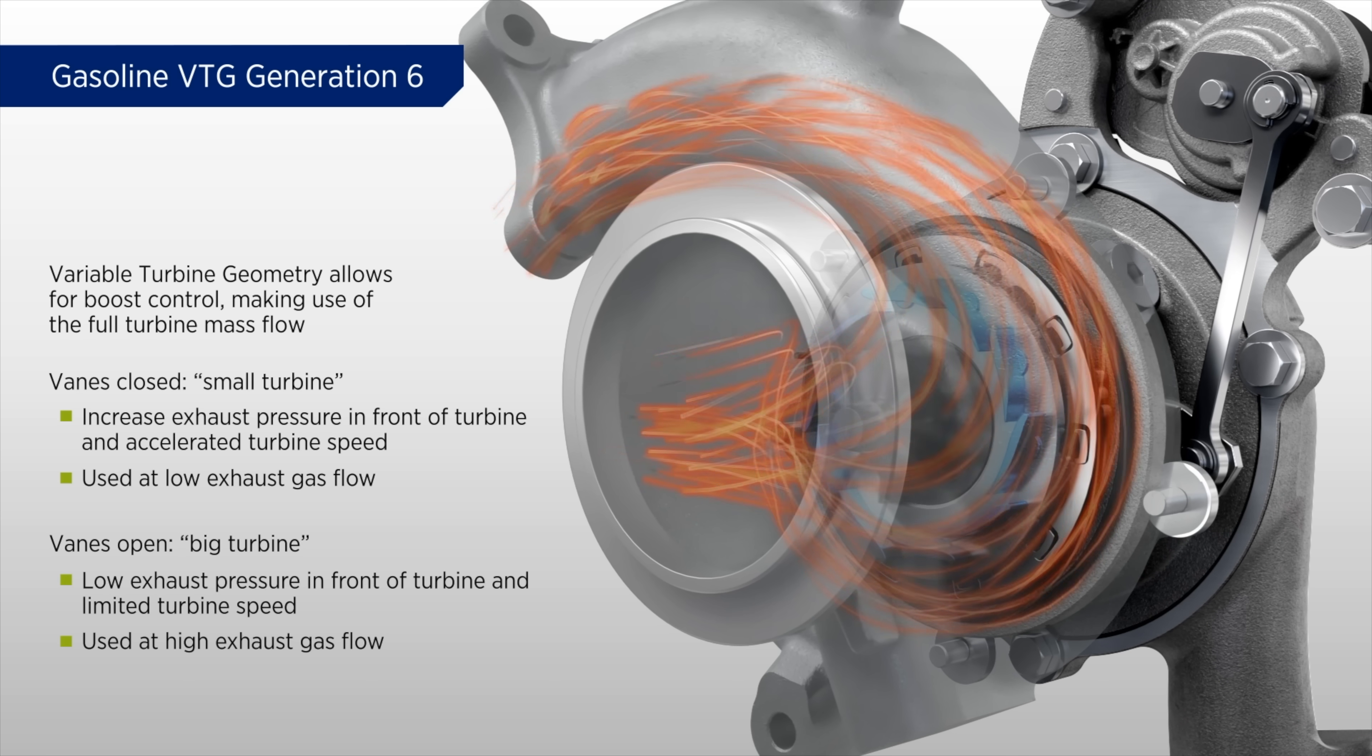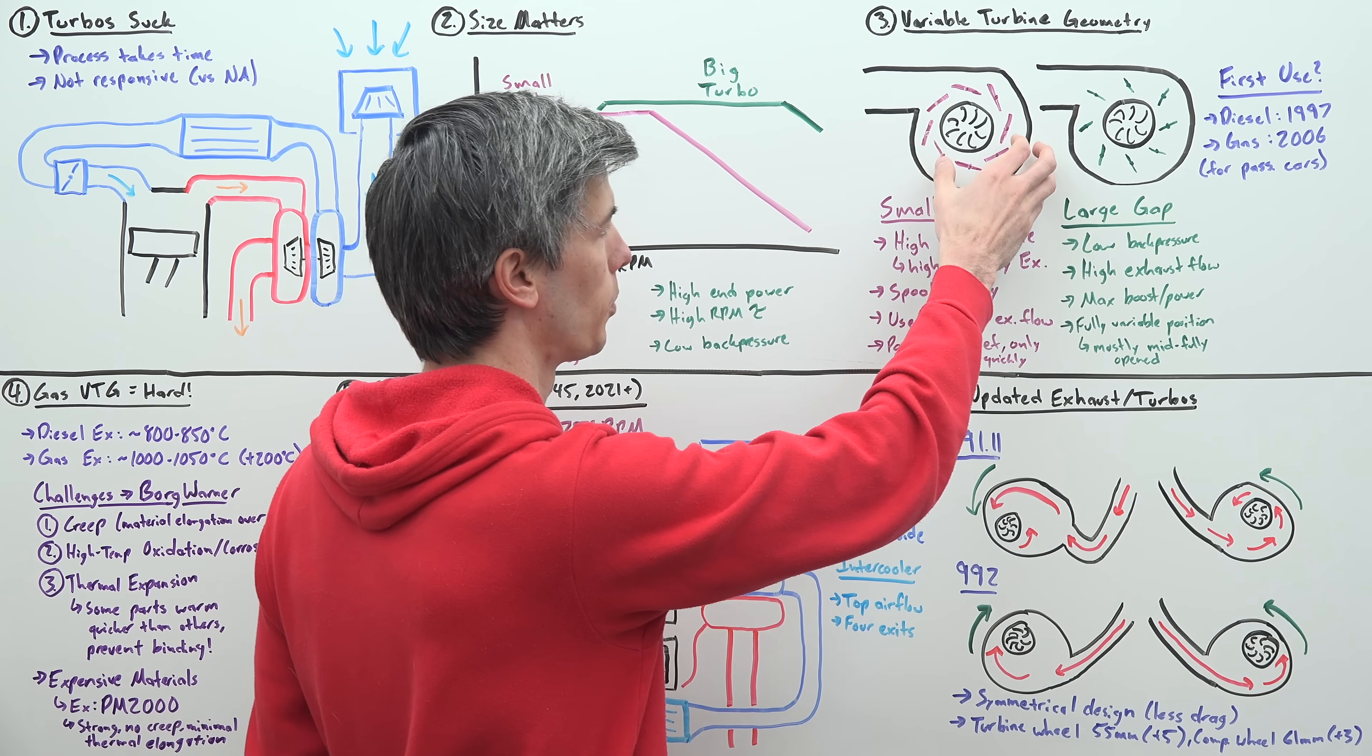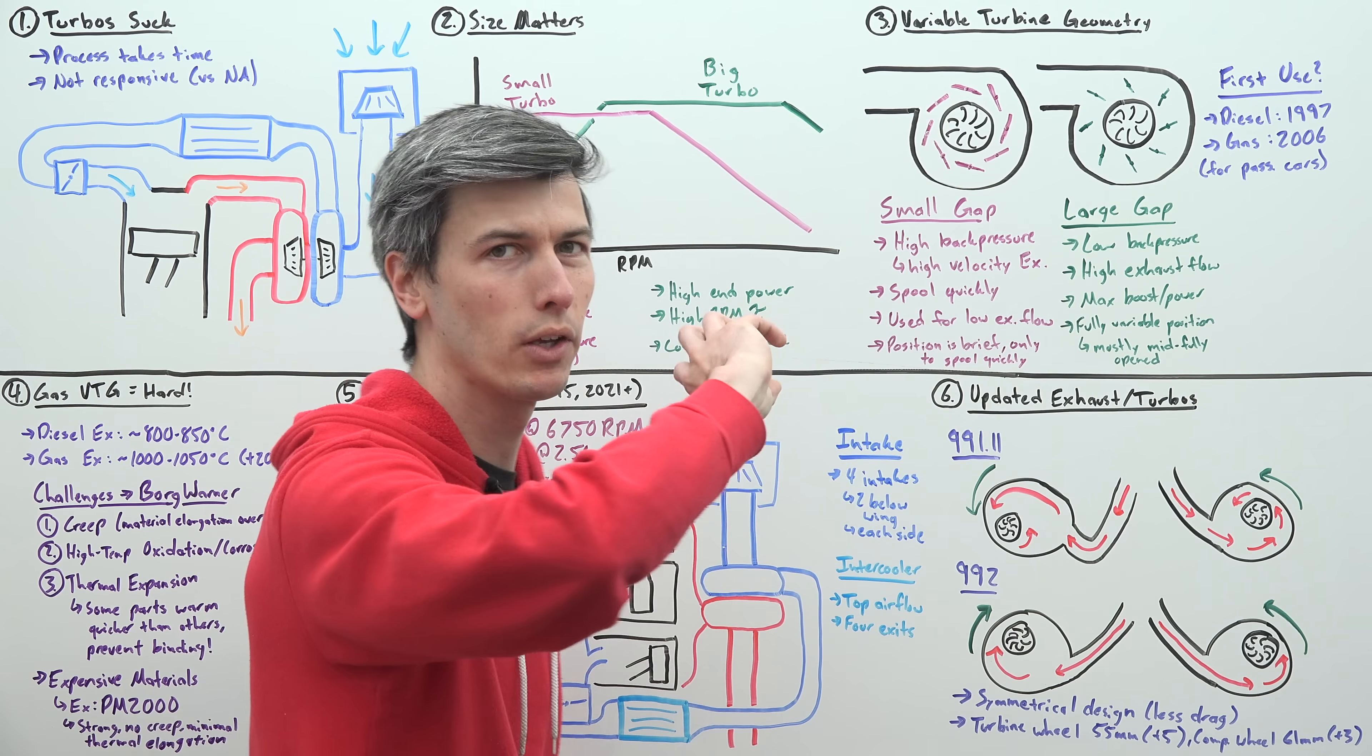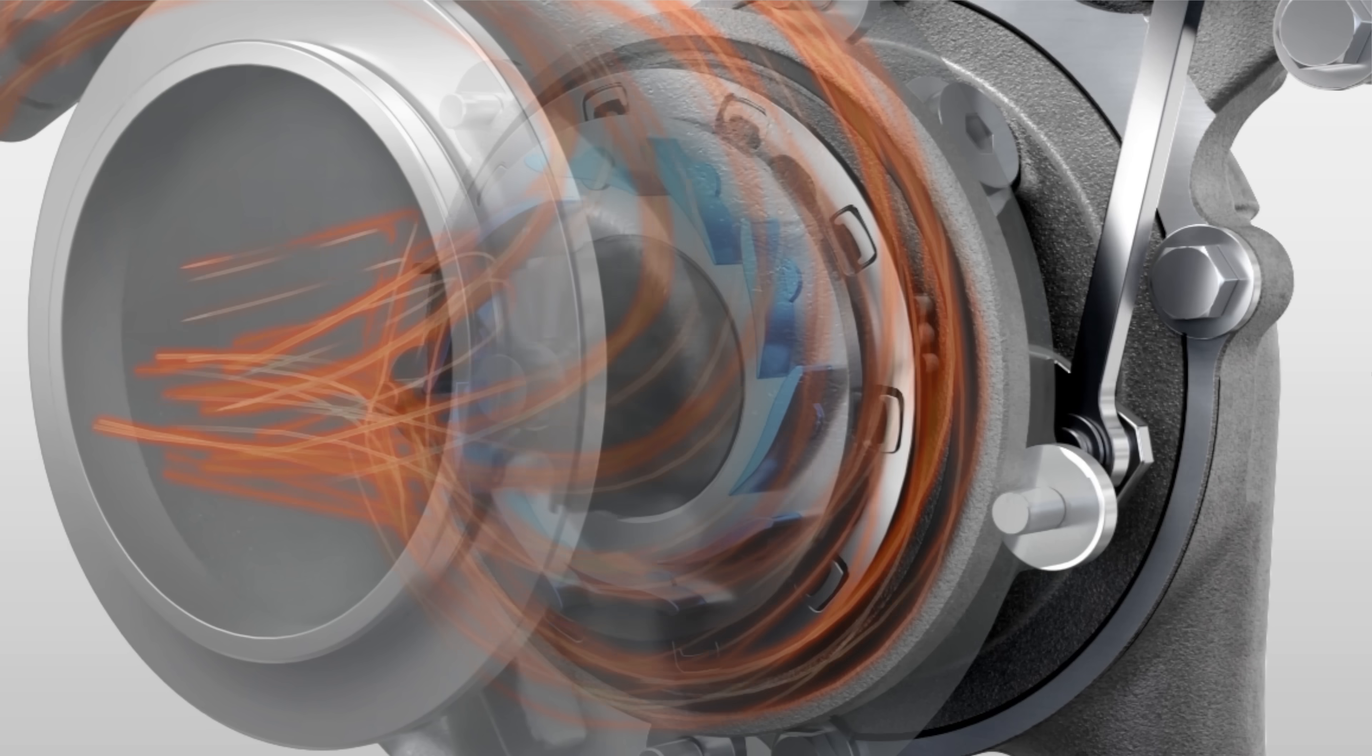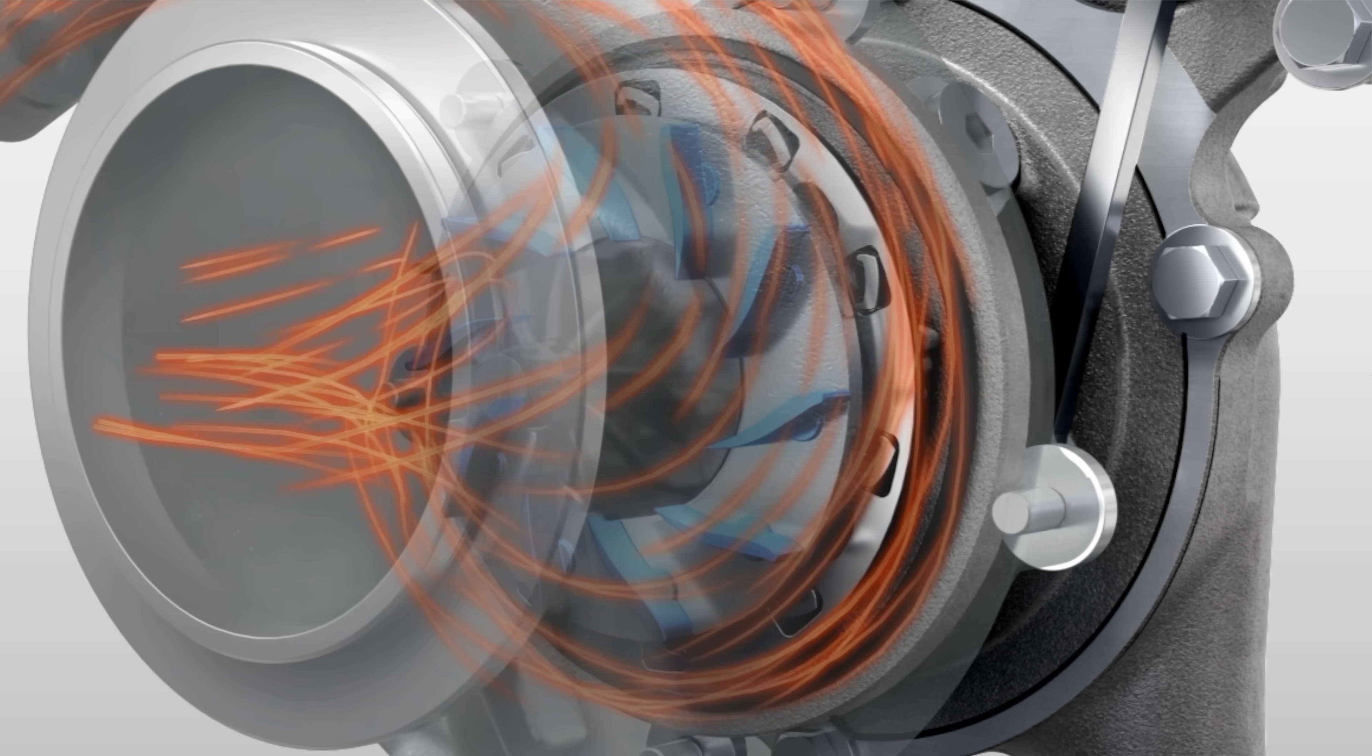It's worth pointing out that there's not simply two settings here. You can vary anywhere in between. However, you're not going to stay at this small gap position very long because once you start spooling that turbo up, it immediately becomes restrictive. Most of the time, if you're using a good amount of throttle, it's going to be in the mid to open position to allow for less restrictive exhaust flow and maximize power and efficiency.